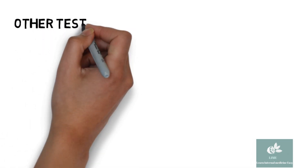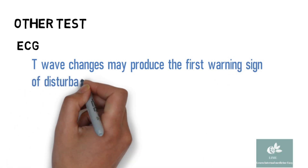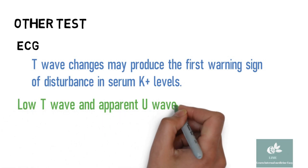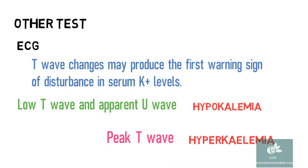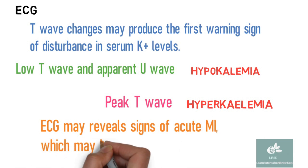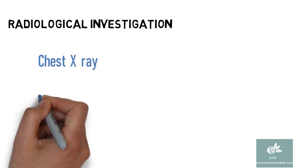ECG T wave changes may be the first warning sign of disturbance in serum potassium level. Low T wave and prominent U wave signify hypokalemia, while peaked T wave is observed in hyperkalemia. ECG may also reveal signs of acute MI, which may be the precipitating factor for DKA. To find the source of infection, chest X-ray and ultrasound abdomen should be done.